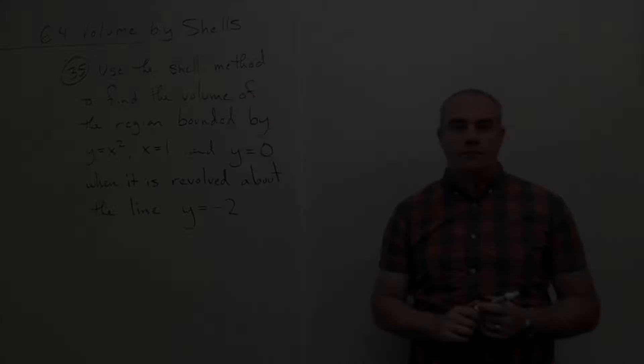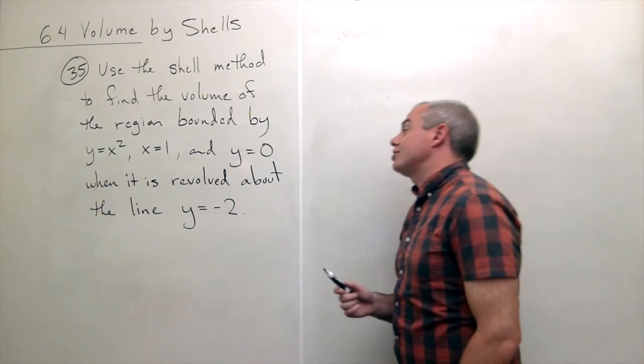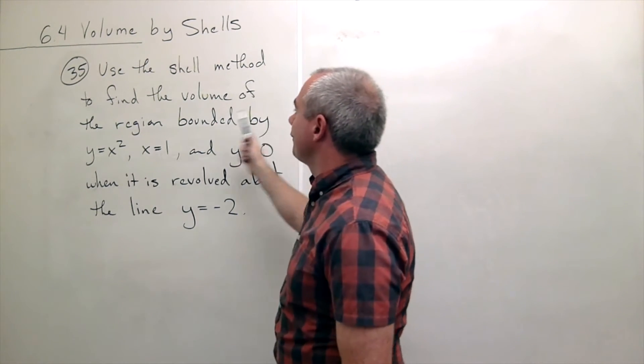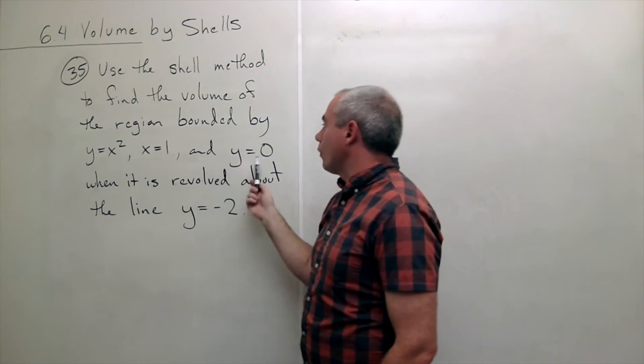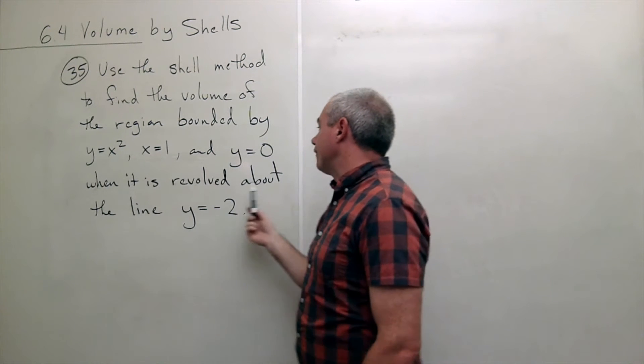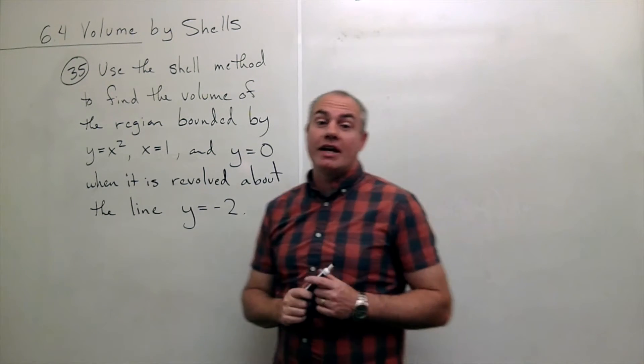I'm the calculus professor and today I'll be talking to you about volume by cylindrical shells. In problem number 35, we'd like to use the shell method to find the volume of the region bounded by y equals x squared, x equals 1, and y equals 0 when it's revolved around the line y equals negative 2.